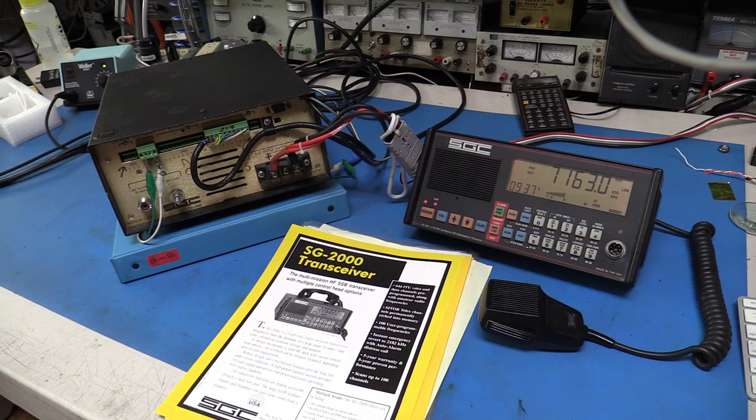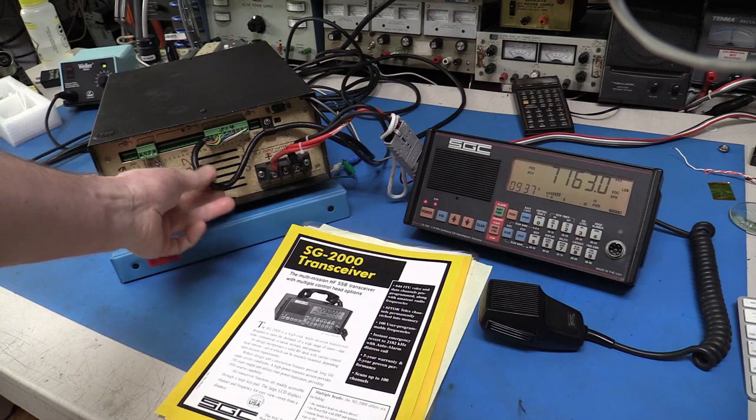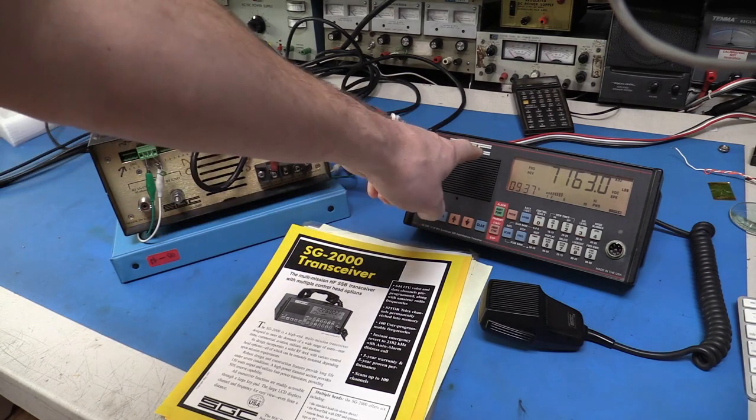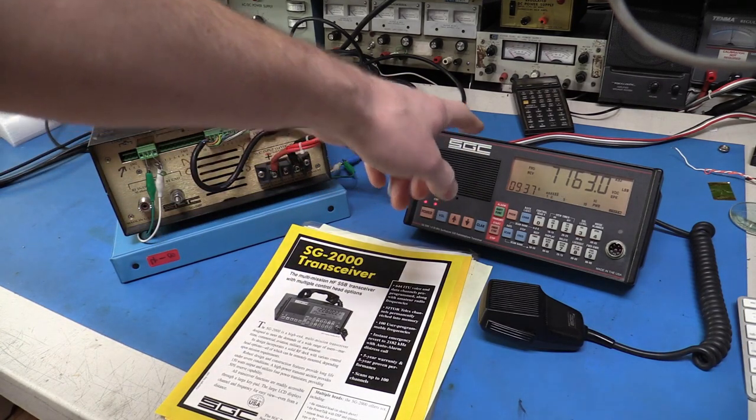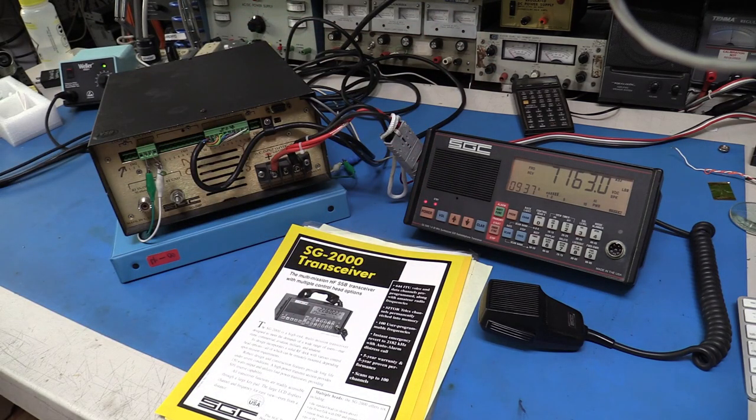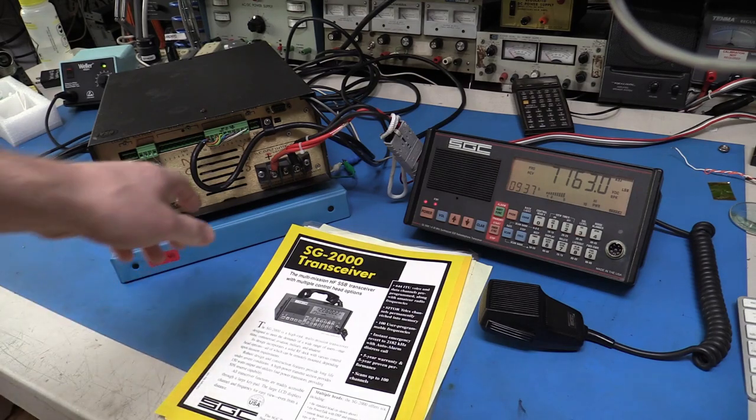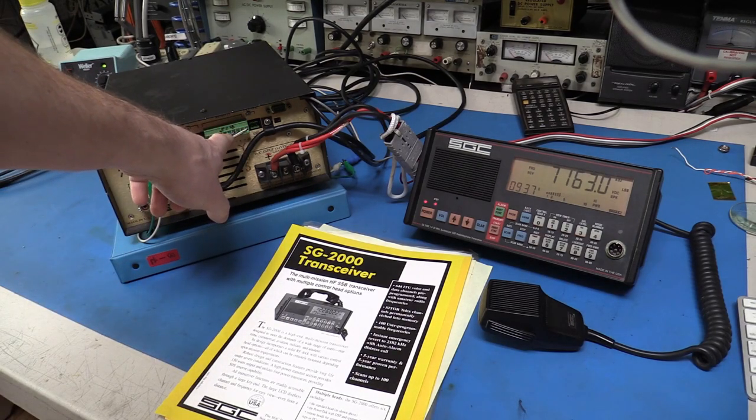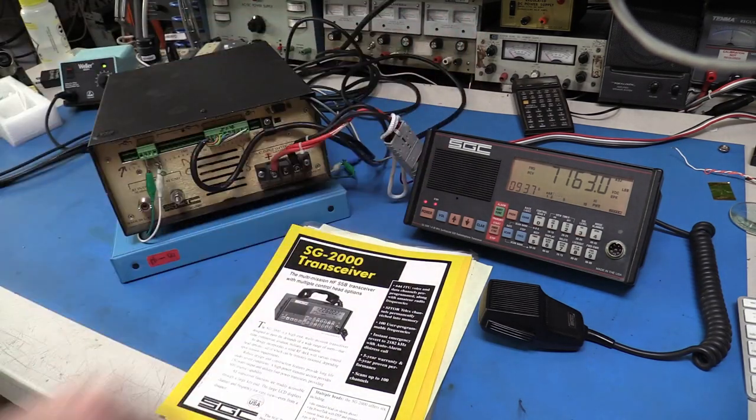The radio is generally sold with a separated faceplate with this 16-pin cable. That's right here. And it can be mounted either on the front of the radio or in another location, as many as 100 feet away without a problem. The designers used balanced audio and balanced data cables. We'll go into that in just a minute.